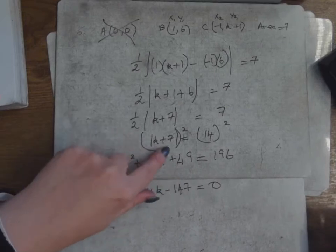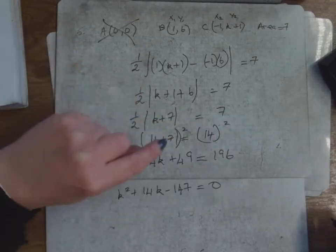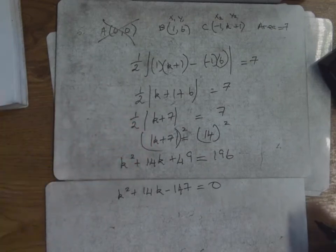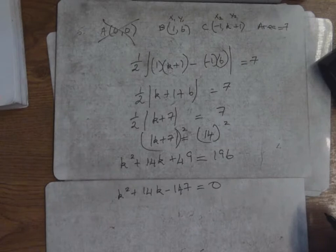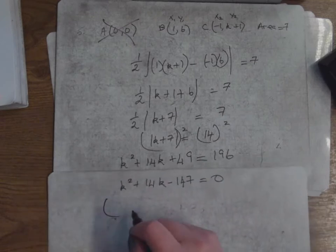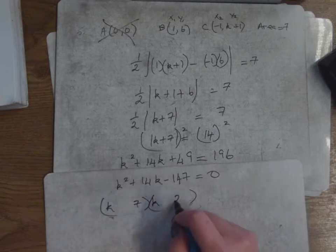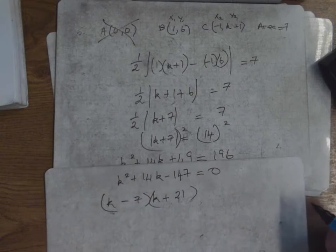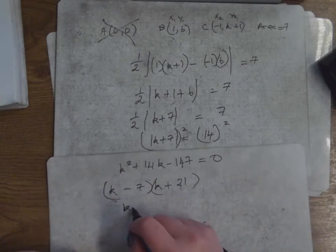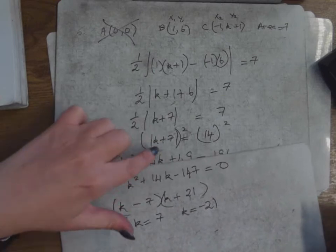It's a modular equation from algebra — the two straight lines mean take the positive value, so you don't know if it's plus seven or minus seven. You square both sides to make sure it's positive. So I get k² + 14k + 49 − 196 = 0, which gives k² + 14k − 147 = 0. Factorize: (k + 21)(k − 7) = 0. Set each bracket equal to zero: k = 7 or k = −21. Those are my two values for k.